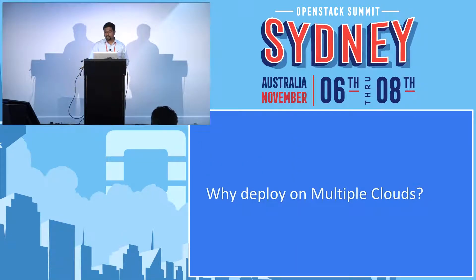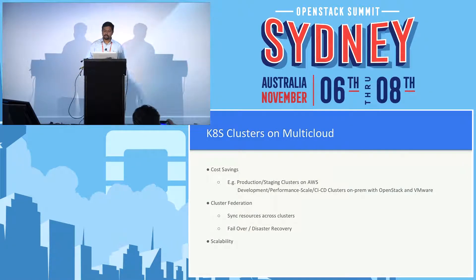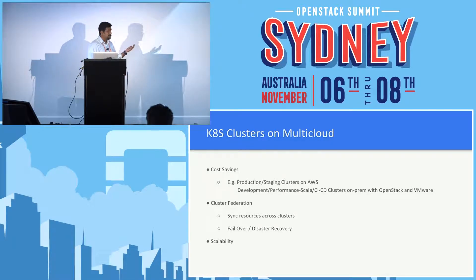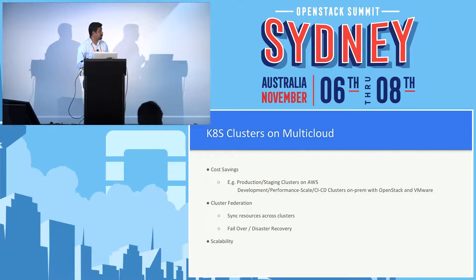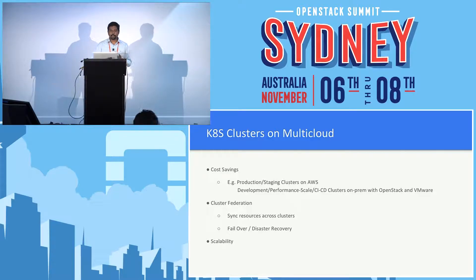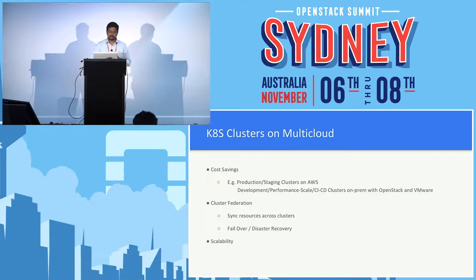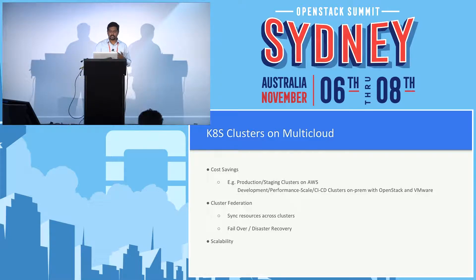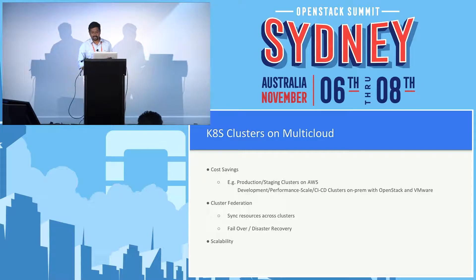So we looked at the advantages of deploying Kubernetes on a cloud provider, but why would you want to do multi-cloud? Multi-cloud is a general trend these days for application deployment. There are different factors. You could be looking at cost savings, where you want to offload all your development, performance, and scale Kubernetes clusters on-prem and run your production and staging workloads on AWS. Or you might be interested in cluster federation, where you want to sync resources across different clusters for failover or disaster recovery. And for scalability purposes, if you are meeting increasing demands, you may want to leverage some capacity on the fly on a public cloud.